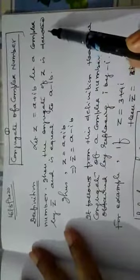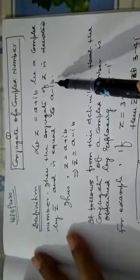Again, listen carefully. If z is equal to a plus ib, a complex number, then the conjugate of z is denoted by z bar and is equal to a minus ib. If z is equal to a plus ib, then its conjugate is a minus ib. So if the complex number is a minus ib, then its conjugate will be a plus ib.